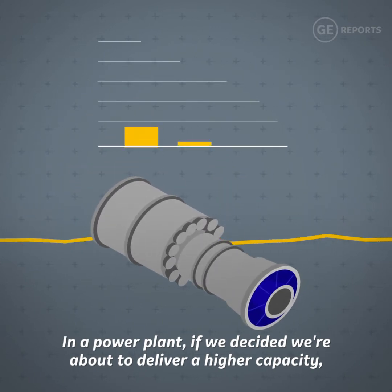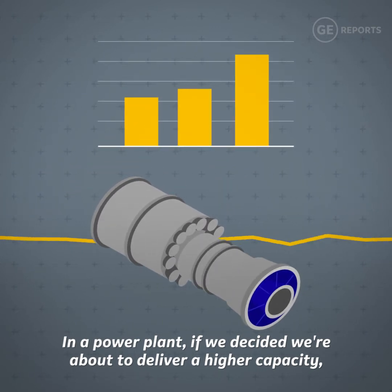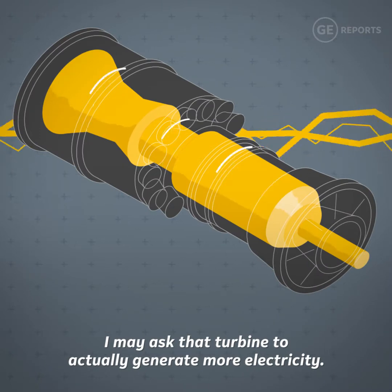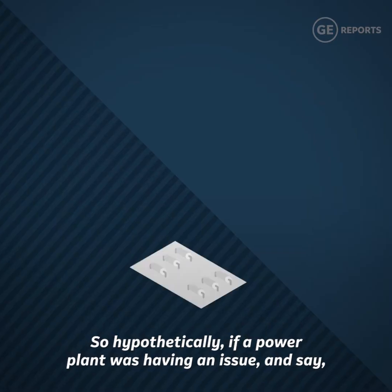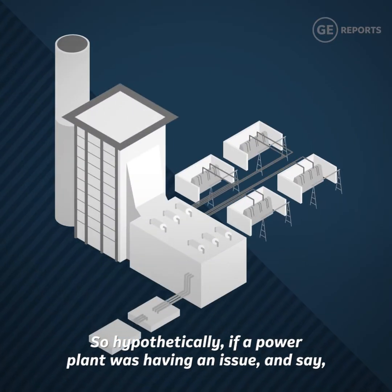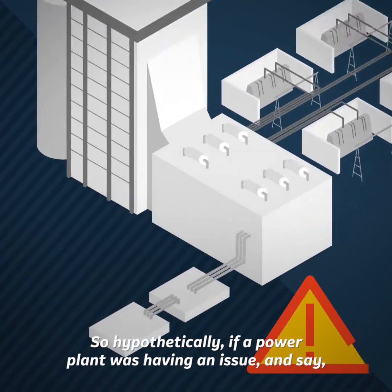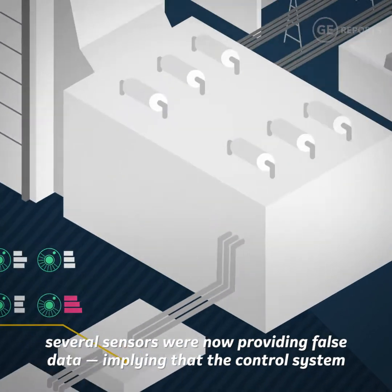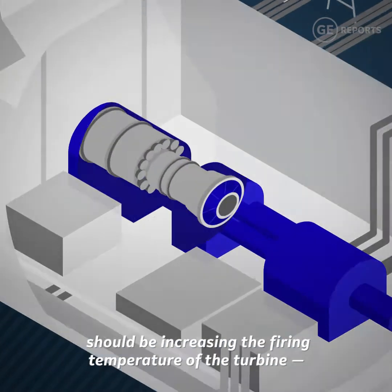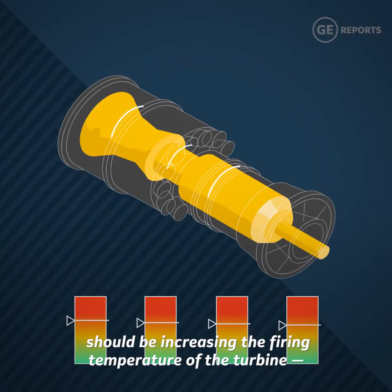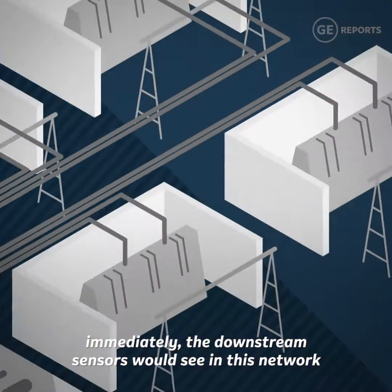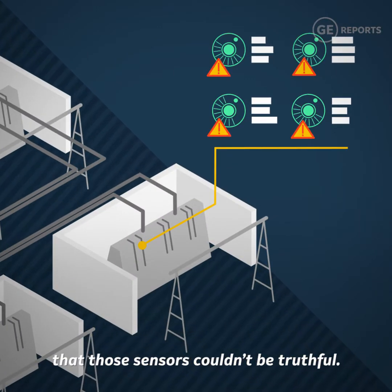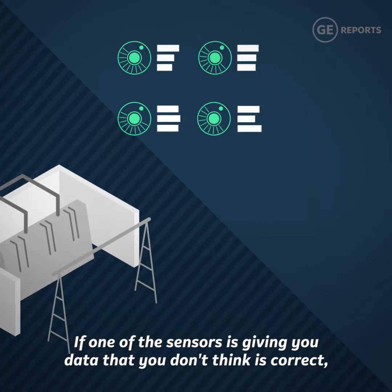In a power plant, if we decide that we're about to deliver a higher capacity, I may ask that turbine to actually generate more electricity. So hypothetically, if a power plant was having an issue and several sensors were now providing false data, implying that the control system should be increasing the firing temperature of the turbine, immediately the downstream sensors would see in this network that those sensors couldn't be truthful.